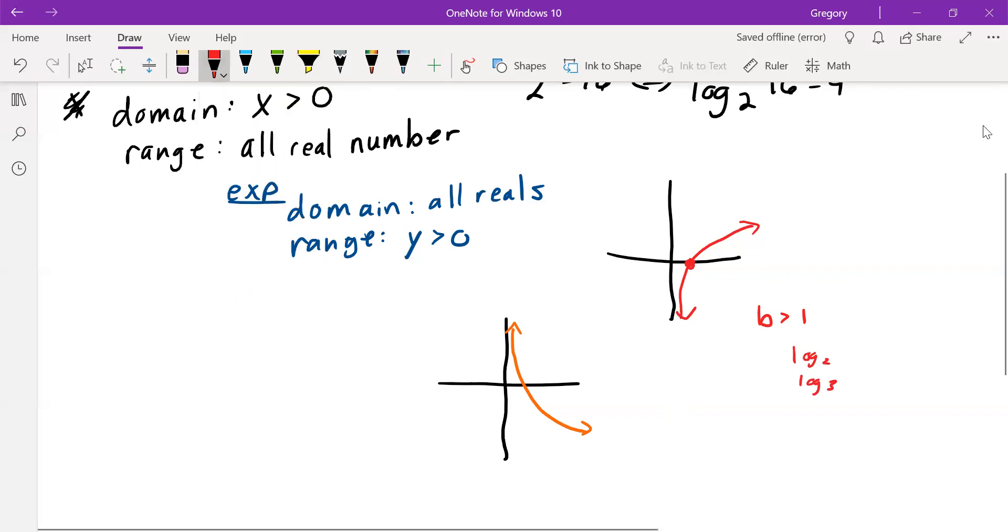This first one, that I drew here in red, this is when our base is bigger than 1. Meaning this is anything from log base 2, log base 3, and so on. And what's important to note is this point here, I highlighted it because in your basic log function, it's always the same. It is always 1, 0. The x-intercept, I should specify.